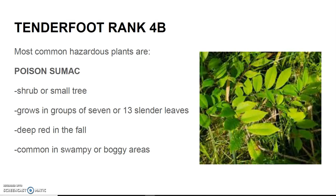Poison Sumac is a shrub or small tree. The leaves grow in groups of seven or thirteen slender leaves. They turn deep red in the fall, and it is common in swampy or boggy areas.